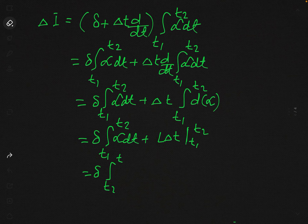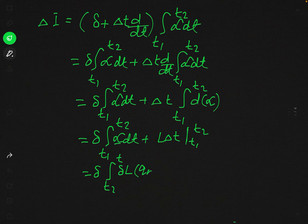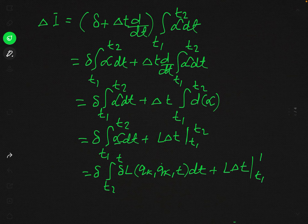Since L is a function of 2f+1 independent variables, when taking the delta variation of L, we must follow the rule of partial differentiation. Applying partial differentiation, we can write this as: integral from t1 to t2 of summation over k of (del L / del q_k) delta q_k plus (del L / del q_k dot) delta q_k dot, dt.